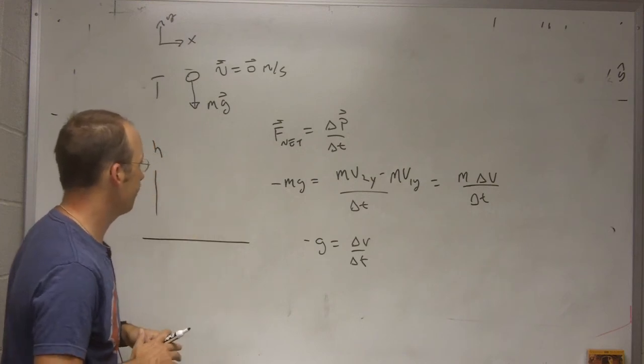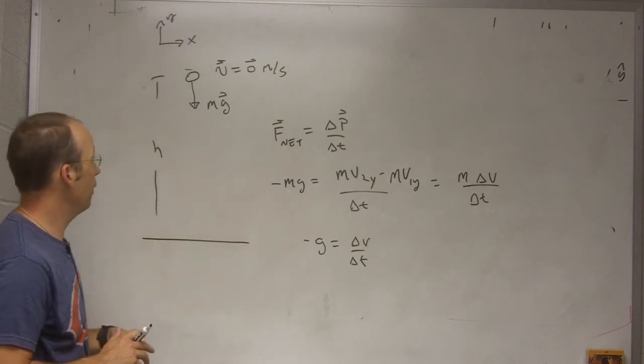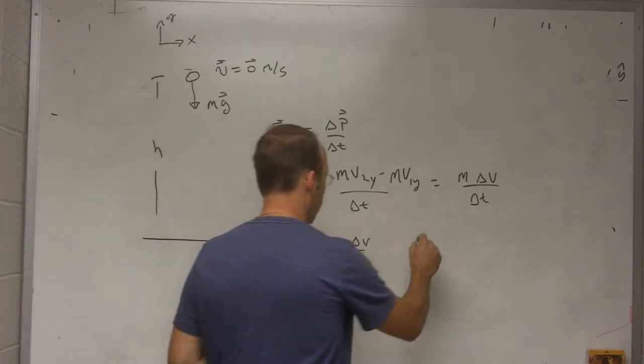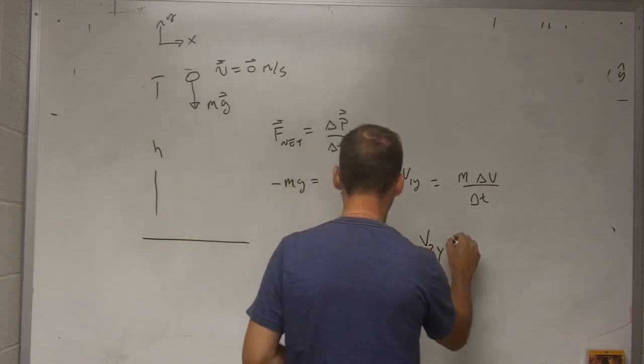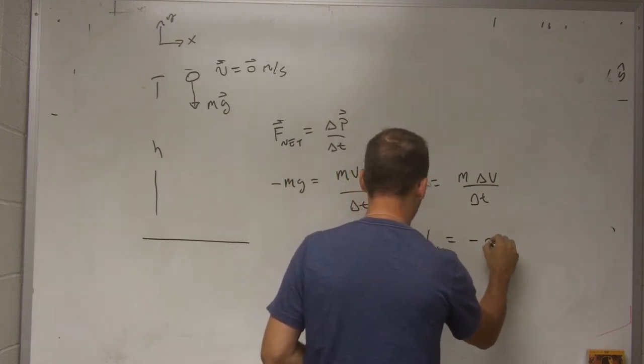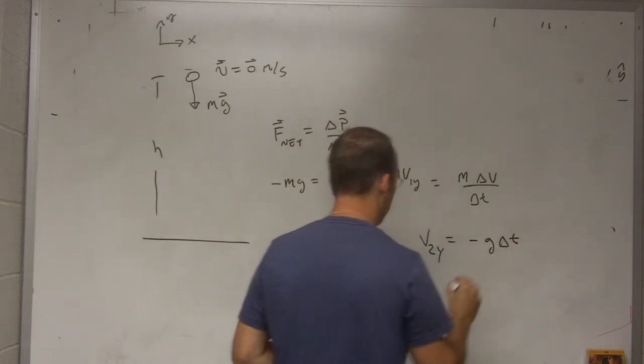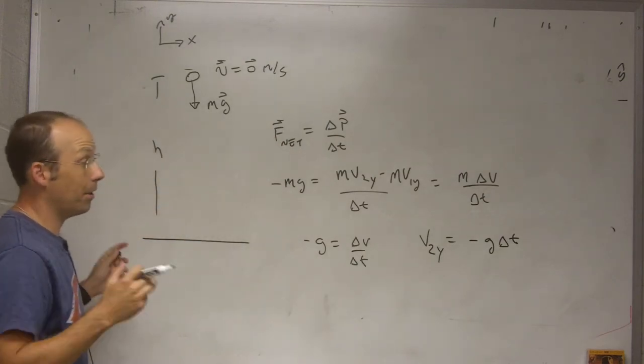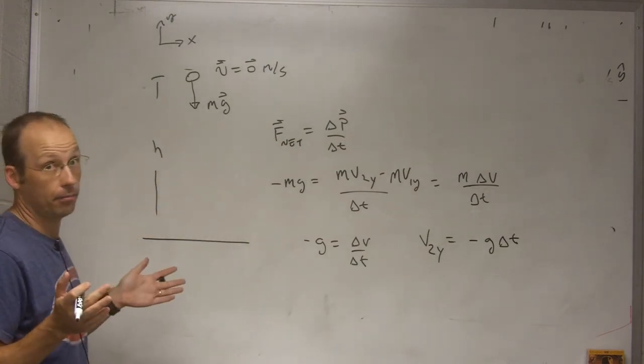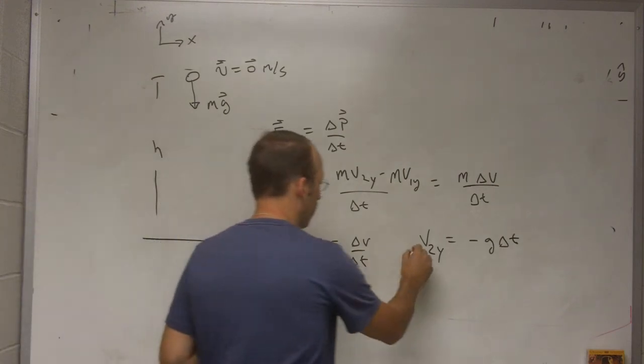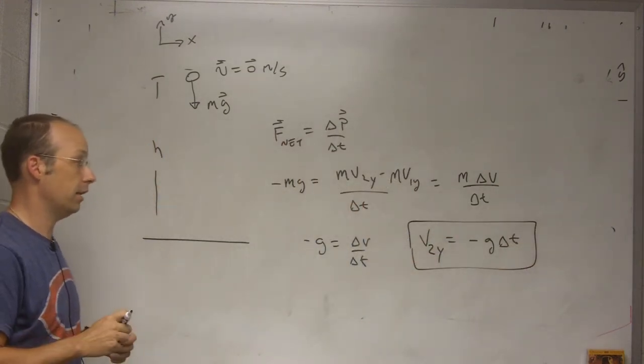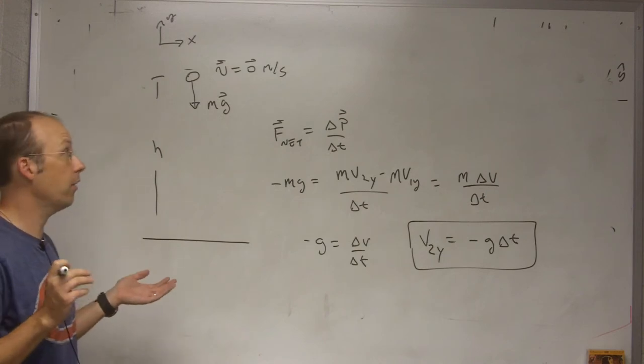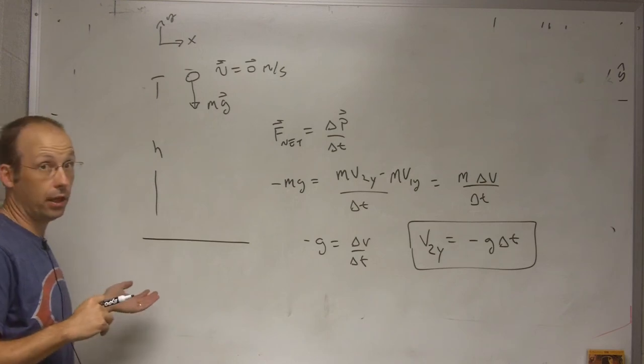Okay, back to this problem though. So my initial velocity is zero, so I get v_2y, if I multiply by delta t, equals negative g delta t. Okay, but I don't know the time, right? But this is just a definition of the acceleration and the change in velocity, but I don't know the time. Okay, so how can I get that? Well, here I can use, go back to average velocity.